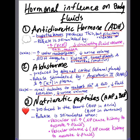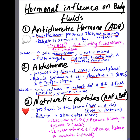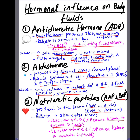The last hormonal influence is the natriuretic peptides, also known as ANP and BNP. These are produced in the heart: ANP in the atria and BNP in the ventricles. Their release is stimulated when vascular volume increases, causing the kidneys to excrete fluid. Conversely, when vascular volume decreases, ANP also signals the kidneys to adjust fluid excretion accordingly.